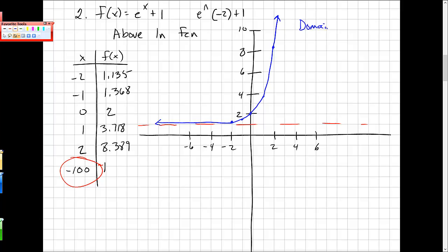So again, domain minus infinity to infinity. Range, based on this asymptote, 1 to infinity. There's no x-intercept. There's a y-intercept of 2. And there's a horizontal asymptote at y is equal to 1. That's it.